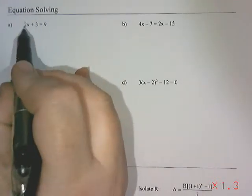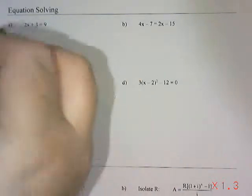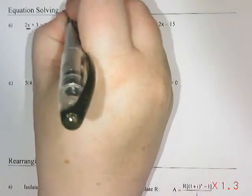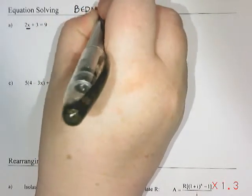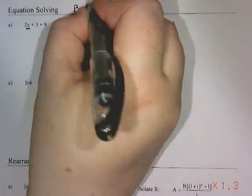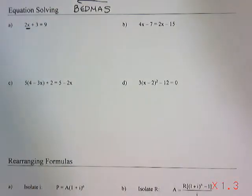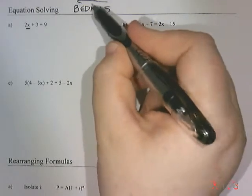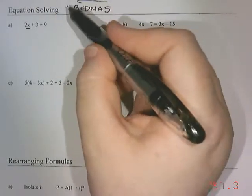So here I have 2x plus 3 equals 9. My goal is to try to find a way to get that x all by itself and everything else on the other side. The previous thing you should have done in your review package was BEDMAS or order of operations, and when we're solving equations, we actually do order of operations backwards. So we do what we usually call SAMDEB, which means you move addition and subtraction first, and then multiplication and division, and then your exponents and your brackets.